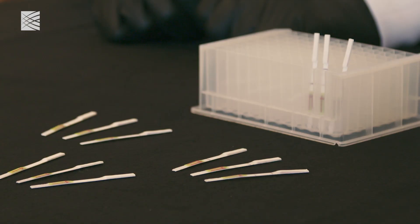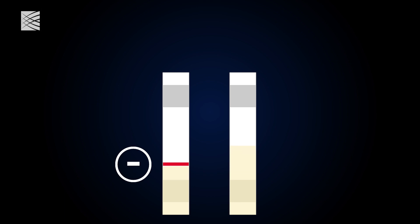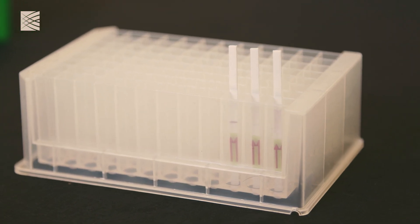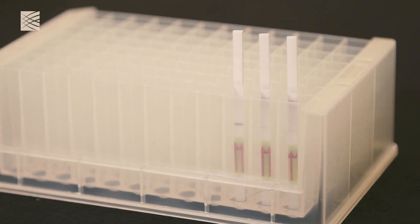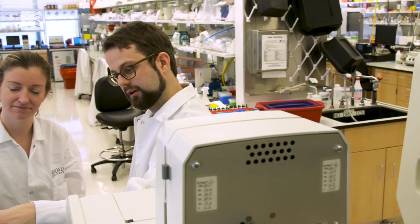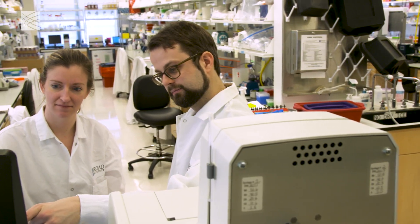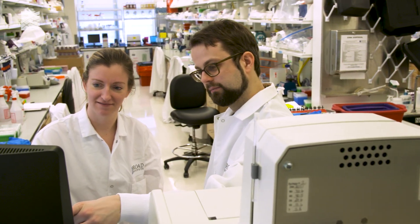The lateral flow-based readout of SHERLOC provides a rapid and easy way for visual detection of samples. The strips will indicate, using two lines, the presence of a pathogen. At the bottom line, we'll see that disappear in the presence of a viral sequence, and the top line will indicate the presence of the sequence of interest.